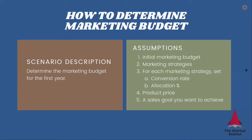What we need to do is determine the marketing budget for the first year. What we have is our initial marketing budget, a list of the marketing strategies we want to use, and for each marketing strategy we've researched the conversion rate and allocation percentage. We also set the product price and we have a sales goal in mind that we want to achieve.